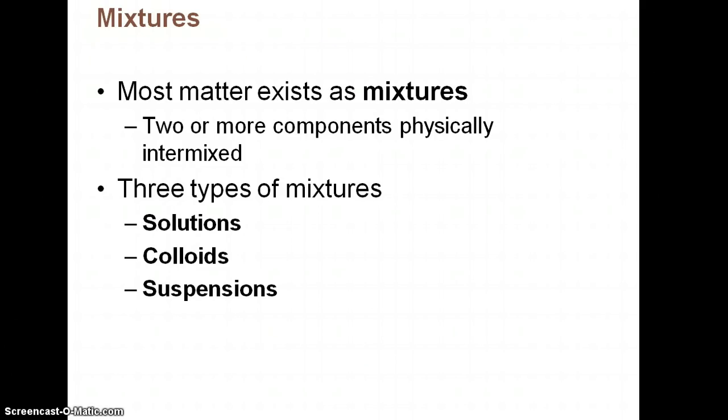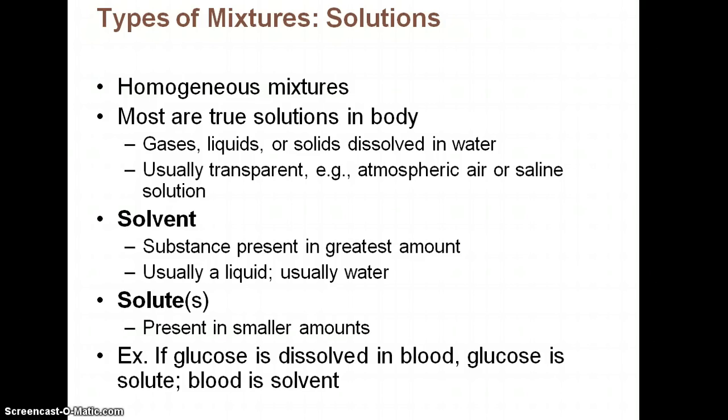So a mixture is going to be two or more components that are not actually chemically combined together. We have three types of mixtures: solutions, colloids, and suspensions. So a solution is a homogeneous mixture. Inside our body, most things are going to be true solutions. This includes even gases like carbon dioxide, oxygen, liquids, or solids dissolved in water. Usually, it's transparent. Think of Kool-Aid, right? If you mix Kool-Aid up, even though it does have a color, it is usually going to be transparent.